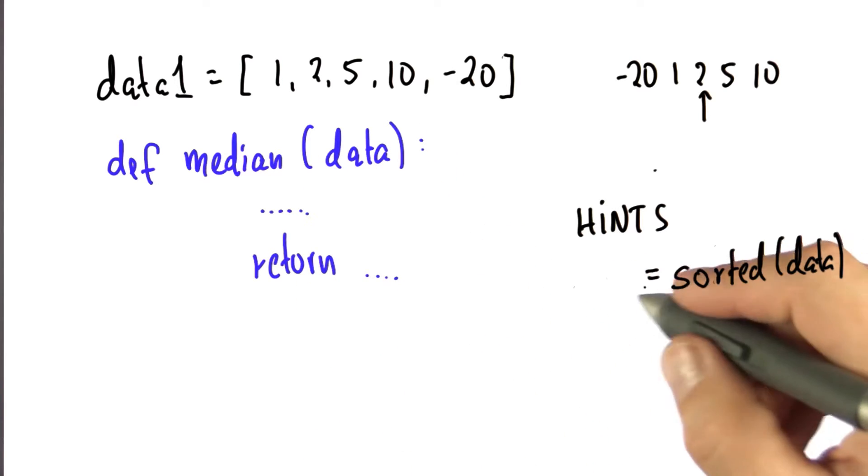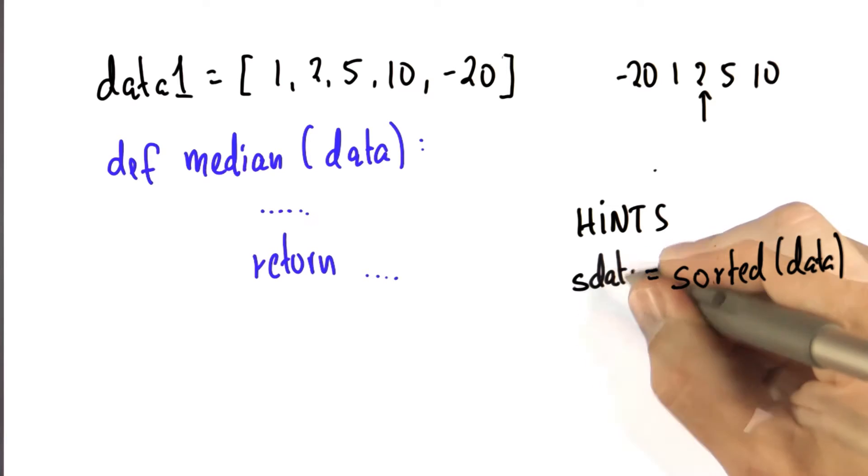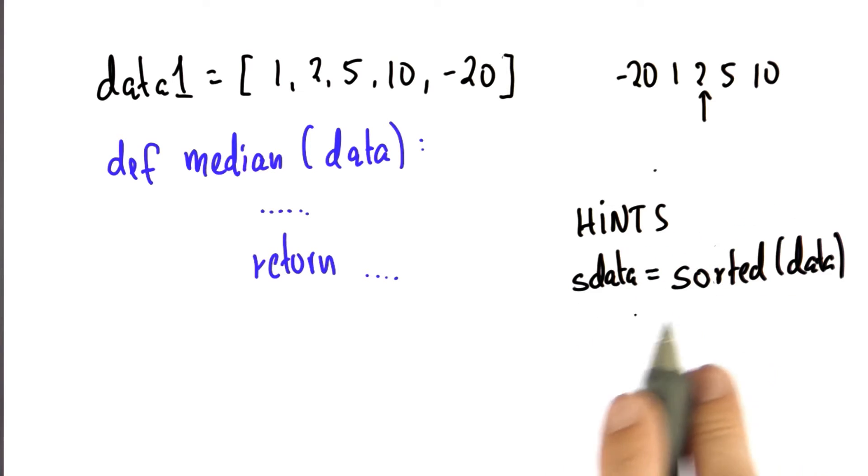It would be useful to assign this to a new list, and the way you do this, you just give it a name, say sorted data equals sorted of data, and that gives you a sorted list.